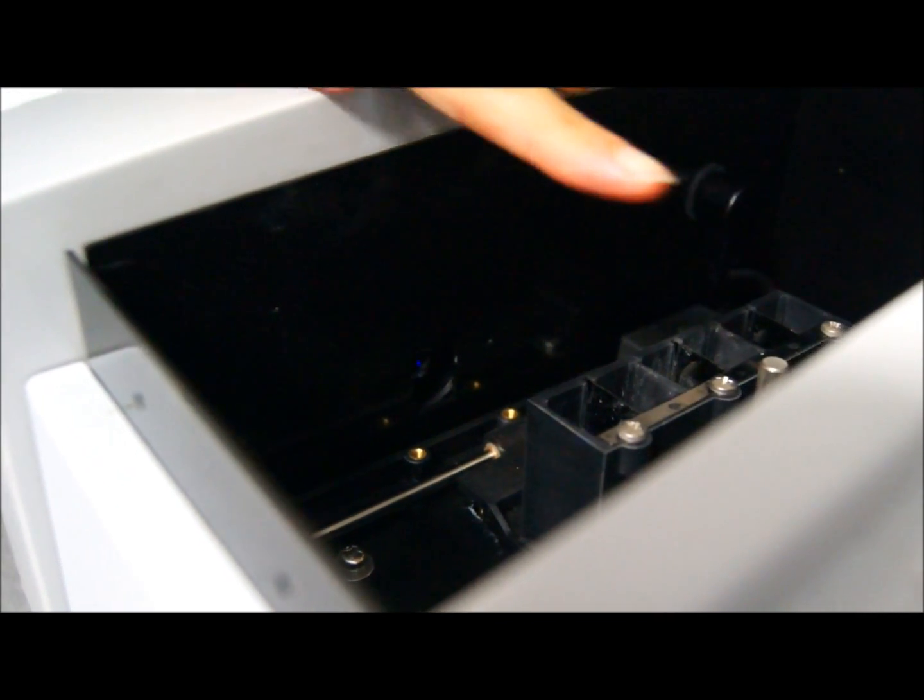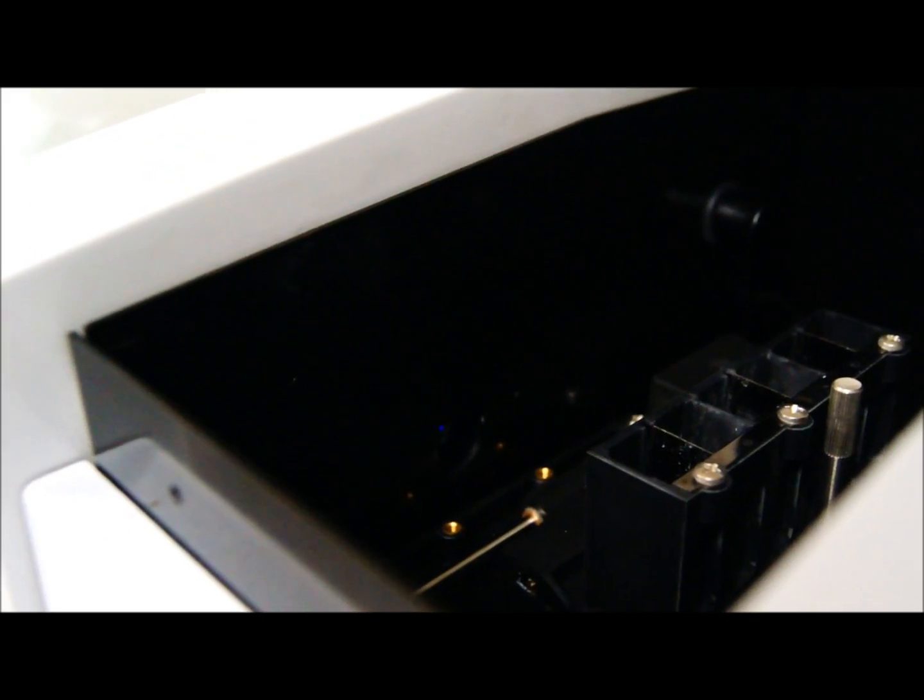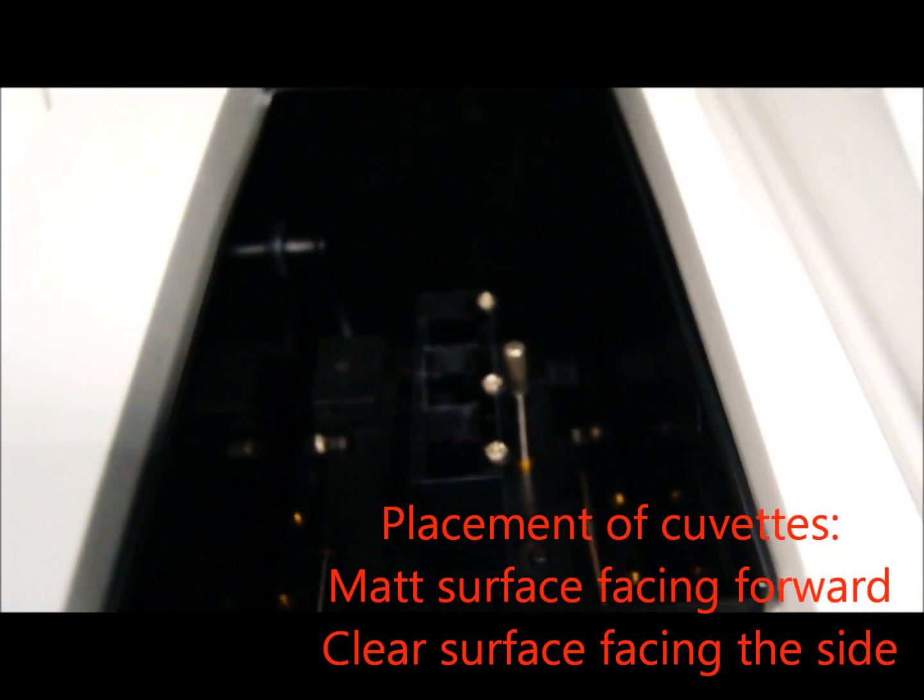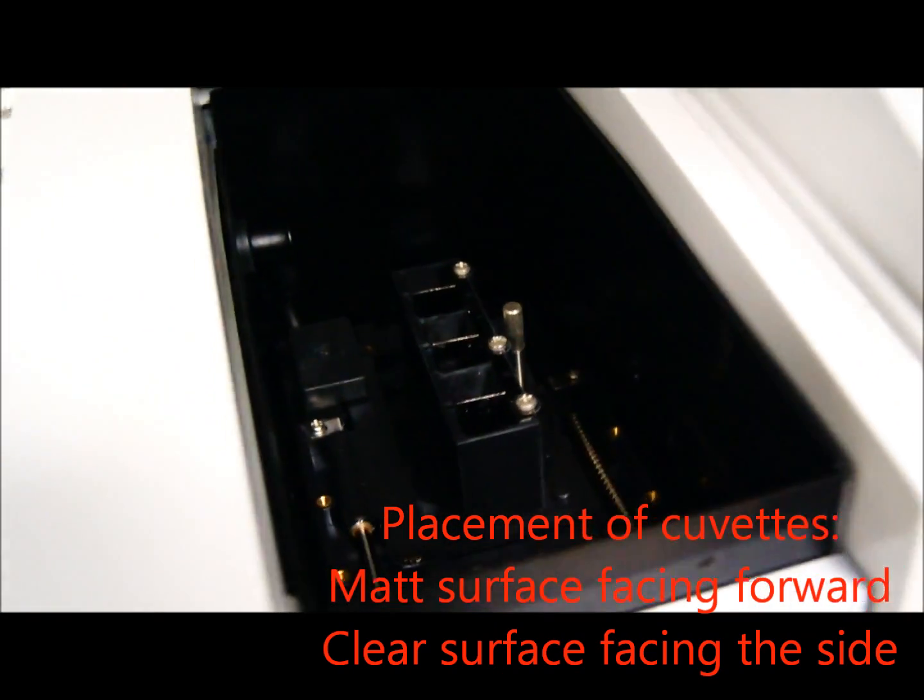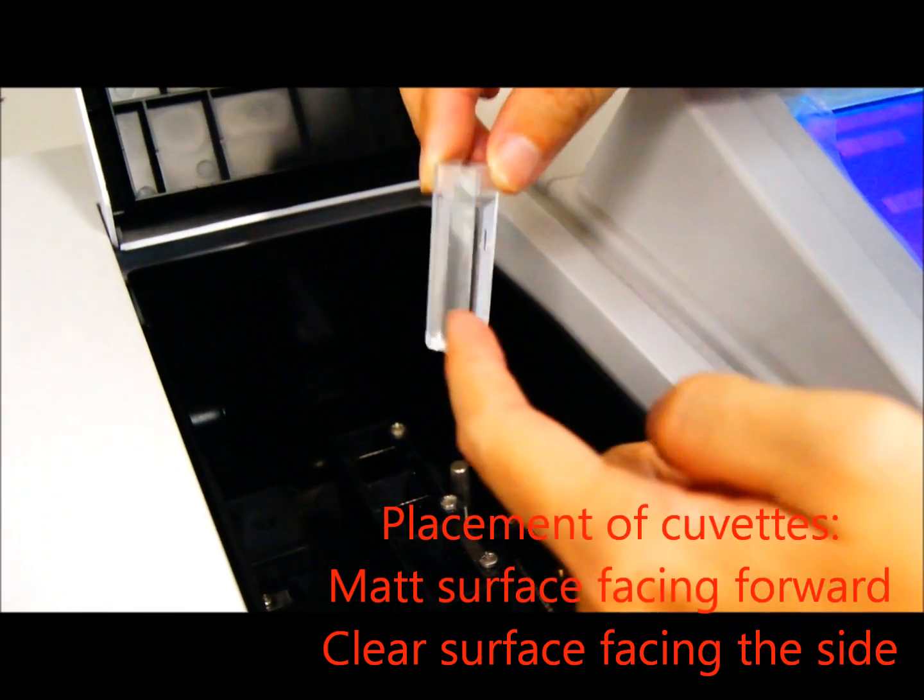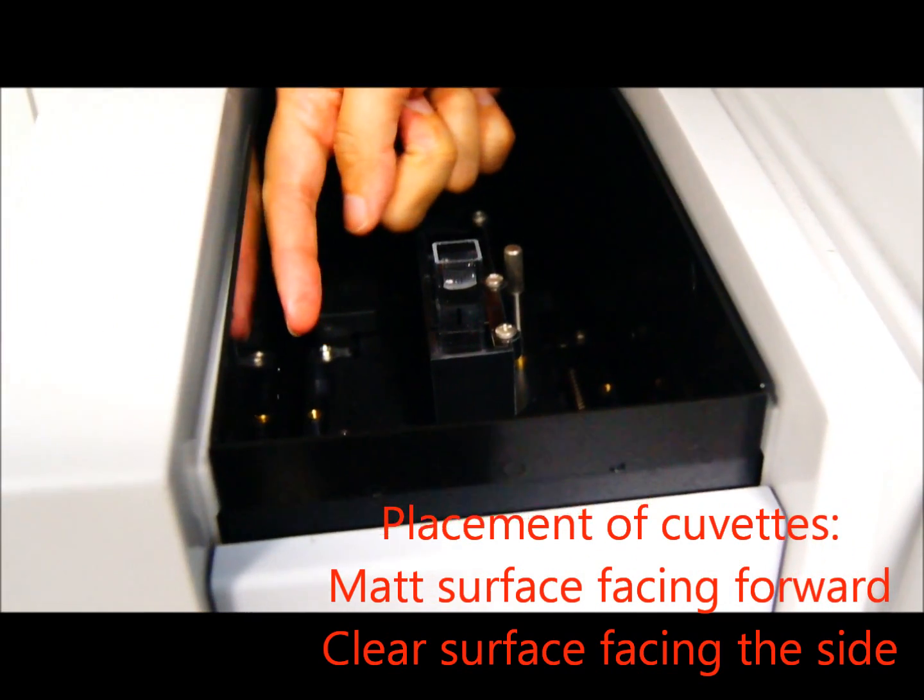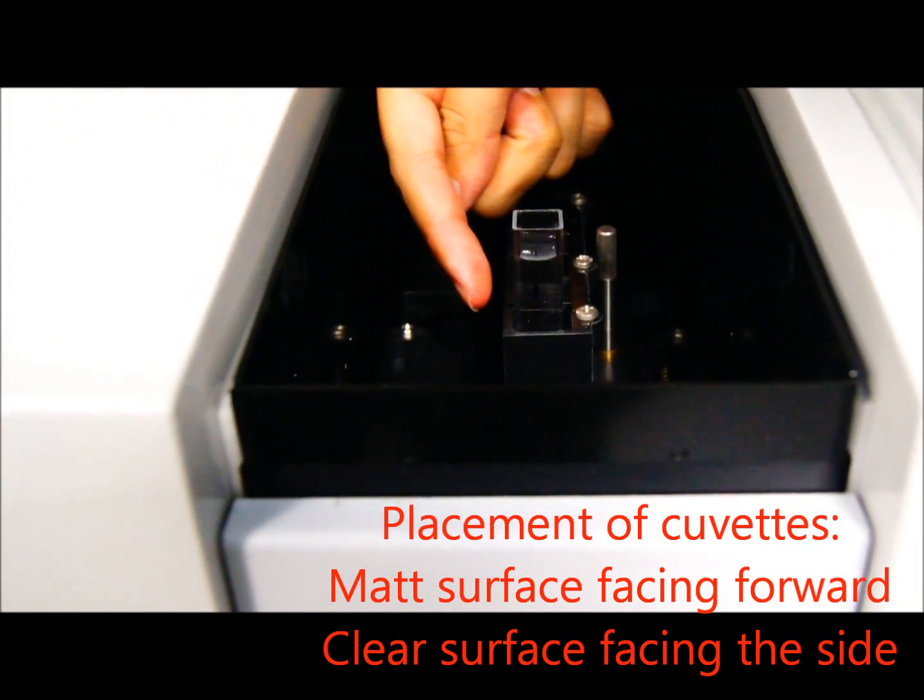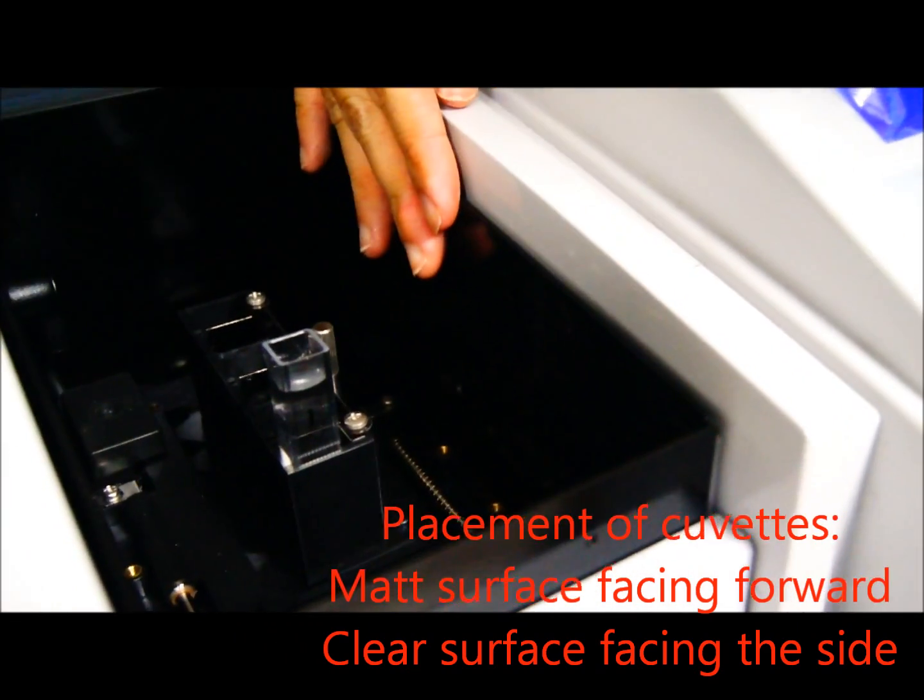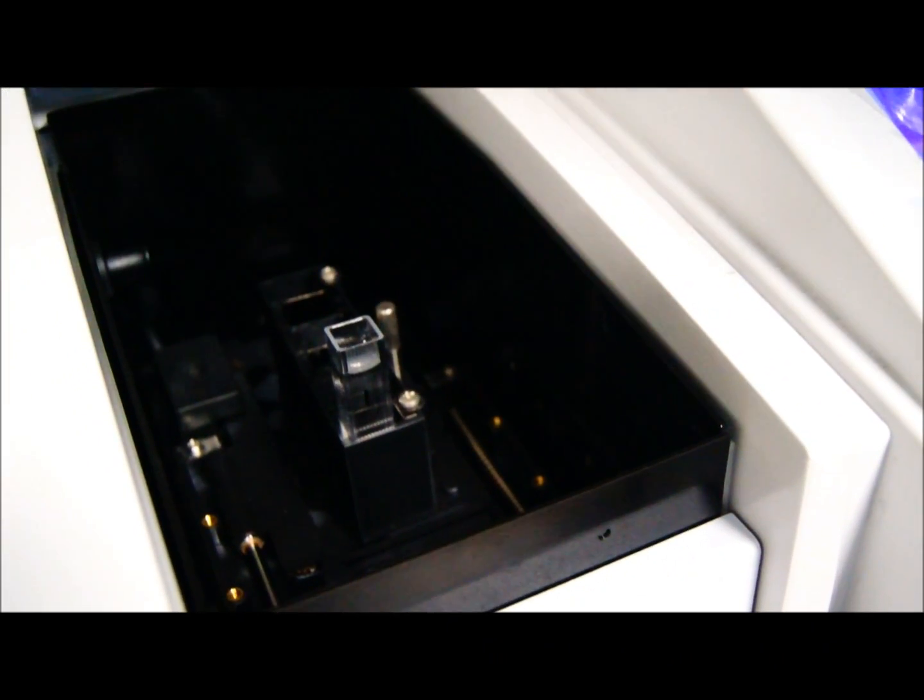The light would come out and then pass through the cuvette, and that's why when we put in the cuvettes, we have to do them with the matte surface facing forward and the clear surface facing sideways so that later on when the light comes out it can pass through the clear surface with no problem and get captured on the other side of the spectrophotometer.